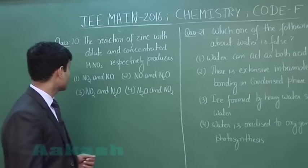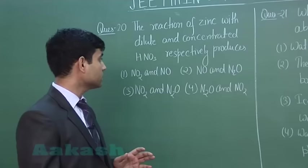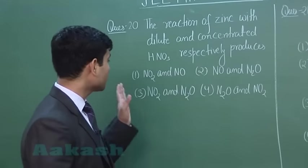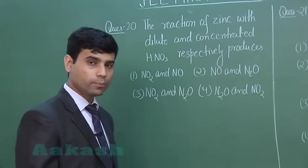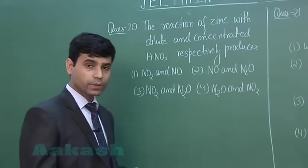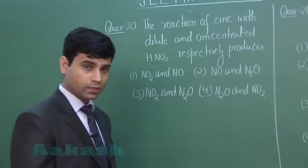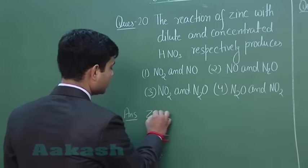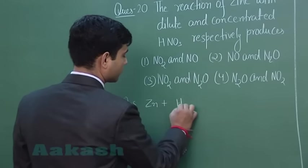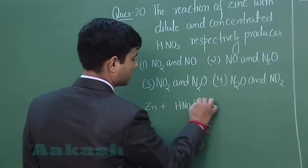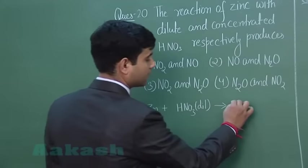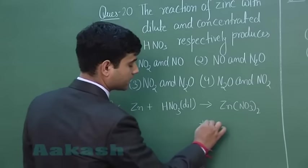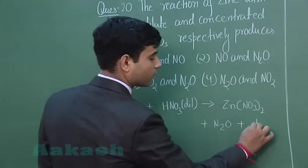The next question says: the reaction of zinc with dilute and concentrated nitric acid respectively produces — (1) NO₂ and NO, (2) NO and N₂O, (3) NO₂ and N₂O, or (4) N₂O and NO₂. When zinc reacts with dilute HNO₃, it gives zinc nitrate, Zn(NO₃)₂, plus N₂O plus water.